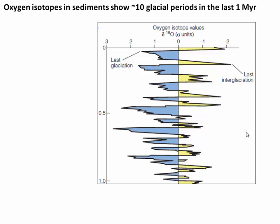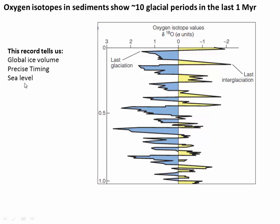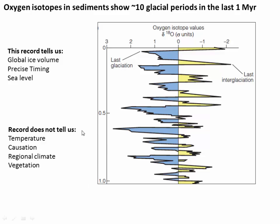Here's a zoomed image of the last million years. What we're seeing here is really ice volume, and this record gives us precise timing and good temporal resolution. If we know the ice volume, we can also back out information about sea level — sea level was about 100 meters lower during the peak of the last glaciation. But the record doesn't tell us everything: it doesn't tell us the exact temperature, anything about regional climate differences (like Europe versus the United States or South America), or what's causing these cycles. What is causing these cycles is a huge question mark — and that's where we'll pick up in the next video.